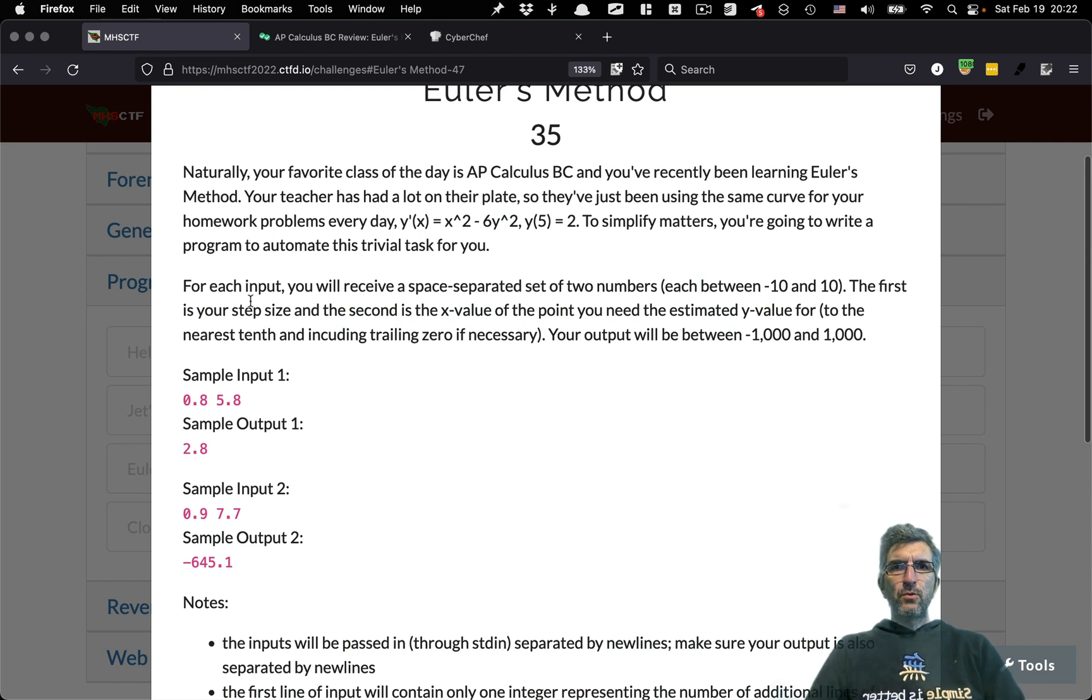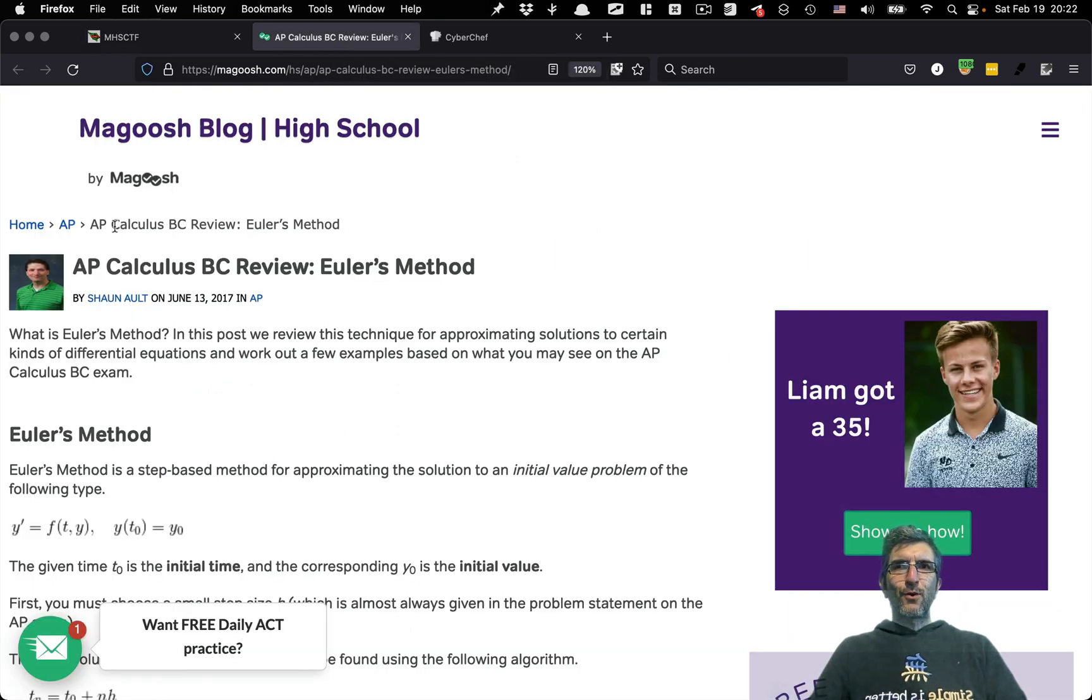The first line of input will contain only one integer representing the number of additional lines of input. For each input you will receive a space separated set of two numbers each between -10 and 10. The first is your step size and the second is the x value of the point you need to estimate y value for. So we have one step and one x and we need to estimate the y using Euler's method.